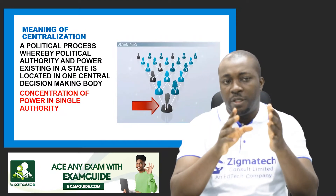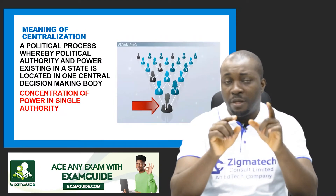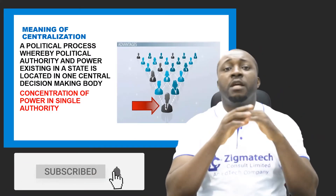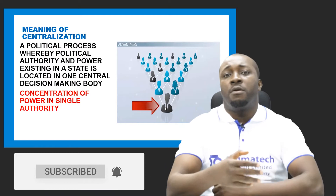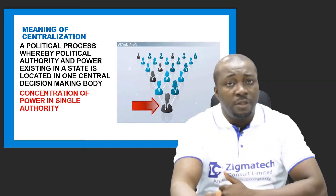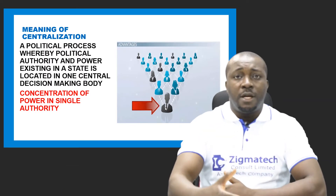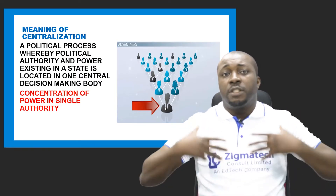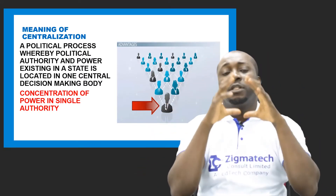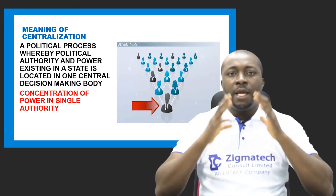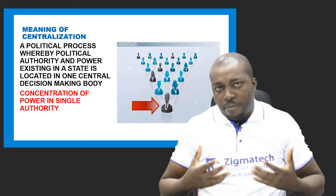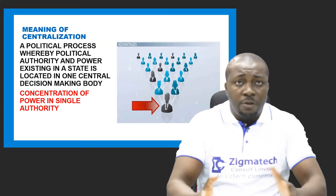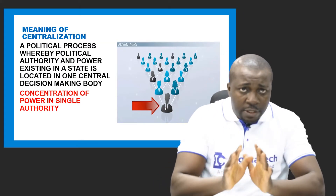In a unitary system, governmental powers are concentrated in one single authority. Even in administration, organizations can run a centralized administration where the employer or founder concentrates all decision-making powers in himself or herself, and it is from that person that other powers can come from. That is centralization.